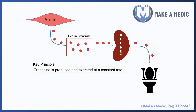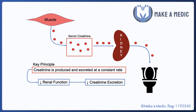The key principle that helps you understand creatinine is that it's produced by the muscle and excreted by the kidneys at a constant rate. So provided that your muscle mass remains fairly static — which it generally does — and that your kidney function remains adequate, the serum creatinine concentration should remain fairly stable. If there is a decrease in kidney function, however, for whatever reason, it means there's going to be reduced creatinine excretion in the urine and hence an increase in serum creatinine.